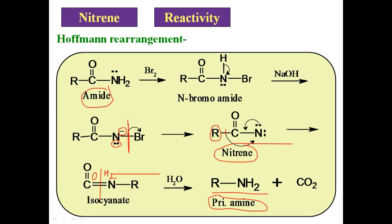We have studied the detailed mechanism of this reaction — how amide converts into primary amine. In the first step there is formation of N-bromoamide, which further reacts with alkali and converts into an anion. The anion loses bromine, giving the nitrene. In the nitrene there is a transfer of the alkyl group from carbon to electron-deficient nitrogen — this is the rearrangement process — and we get the isocyanate. Isocyanate further reacts with water and we get the primary amine. This is the Hofmann rearrangement, a very important organic reaction which involves formation of nitrene as an intermediate.